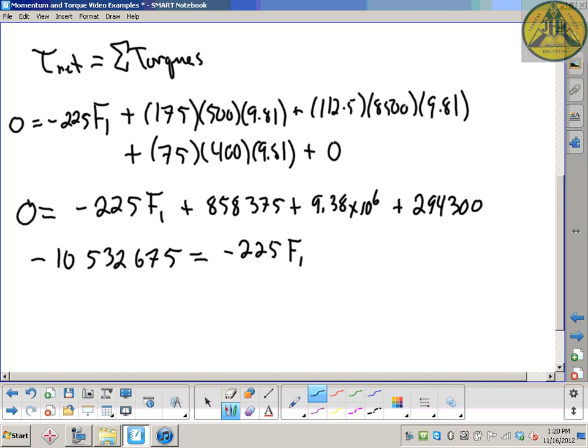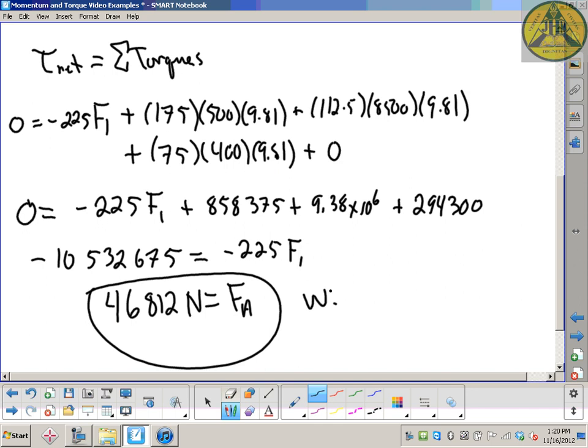So negative 10,532,675 divided by 225, and we get exactly what we're supposed to get. The upward force provided by column A is 46,812 or thereabouts. So no, it won't break - it will survive. Now mind you, there's only two cars on it, so add someone walking with groceries and that bridge is done for.